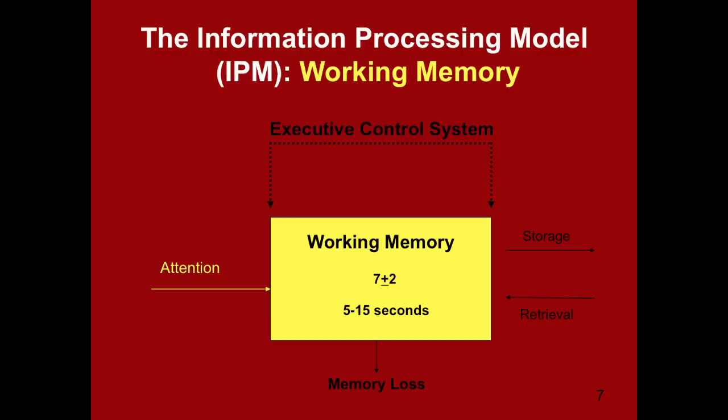The executive control system is one of three components of working memory and is very important to the way we learn. This is where we process things consciously and make meaning out of the information we're attending to. The executive control system organizes information and makes inferences about it to make new information meaningful. It also decides which information we attend to — what's important and what's not, what we need to rehearse, what we can let go to memory loss, and what information gets sent to long-term memory because it's important enough to retrieve later. However, it can be very easily fatigued when several things are competing for the short duration and small capacity of our working memory.